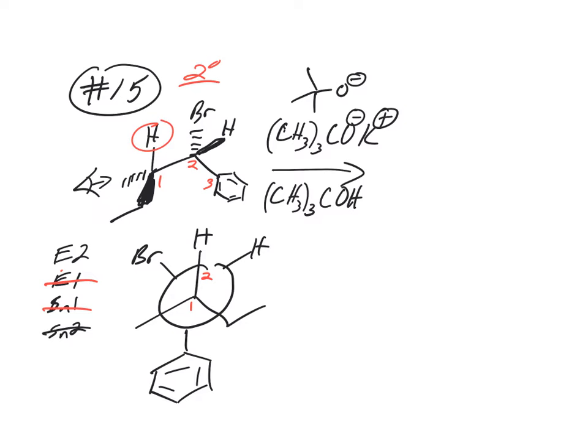So now you need to rotate one of the carbons, one or two. It doesn't matter which one you rotate, you just need to rotate one of them because you need to get this bromine on carbon two and this H on carbon one 180 degrees apart. So let's rotate carbon one, and we're going to rotate 120 degrees.